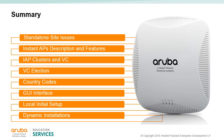In this module we saw the standard small site issues where an IAP can be helpful. We described the IAP features. We looked at the IAP clusters and virtual controller, and we looked at the virtual controller election process. We talked about country codes. We looked into the very beginning of the GUI interface. We looked at how we can do a local initial setup and also how we can do dynamic installations.